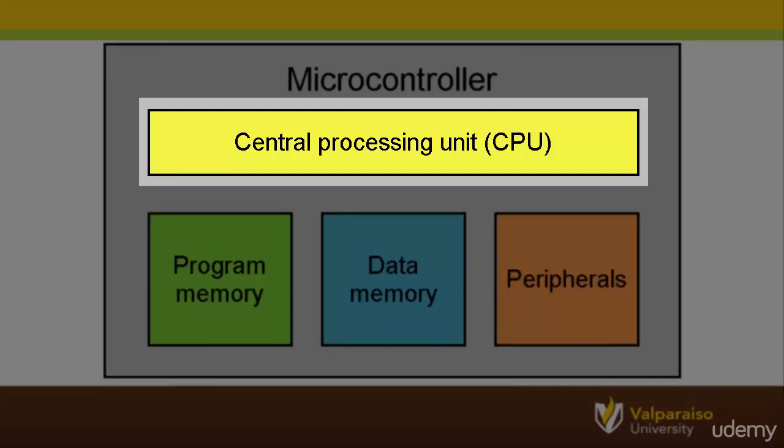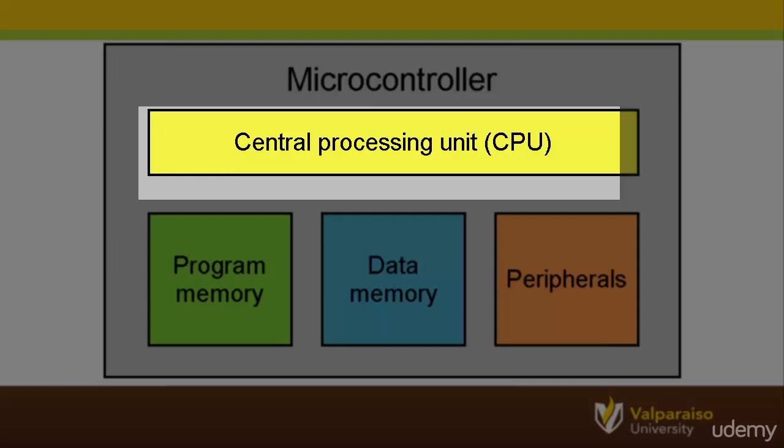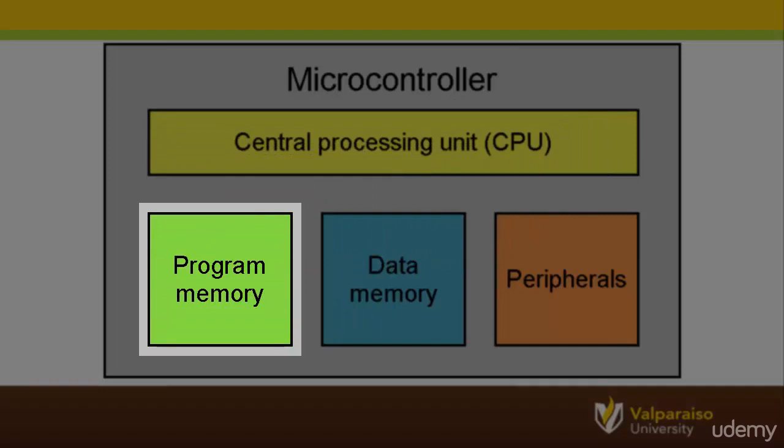Occasionally it is referred to as the core, but that is more of a slang term. It is the CPU that does the actual processing of information and instructions in the microcontroller. If the microcontroller is the brain of an embedded system, you can think of the CPU as the cerebrum of the brain. The CPU processes the instructions from your program.